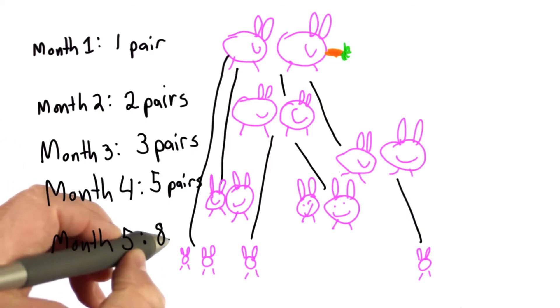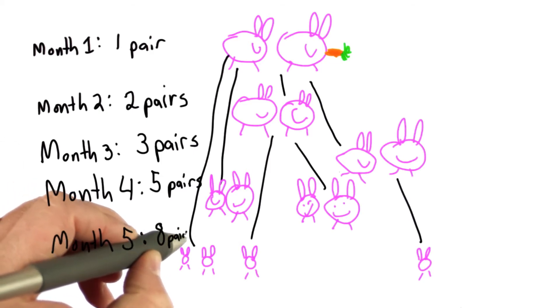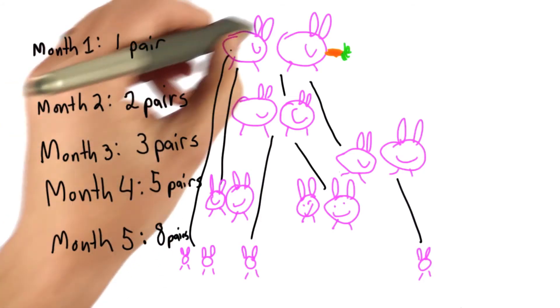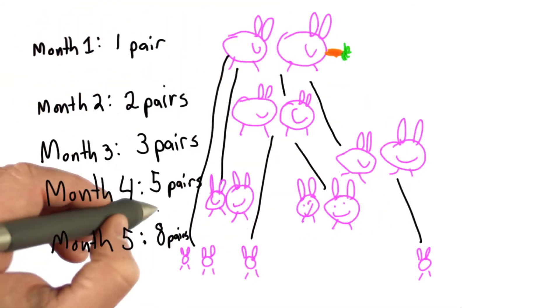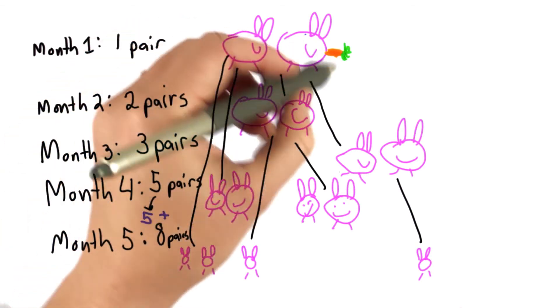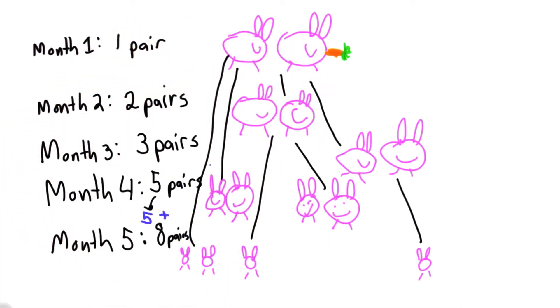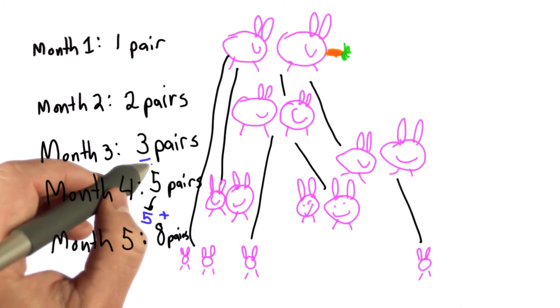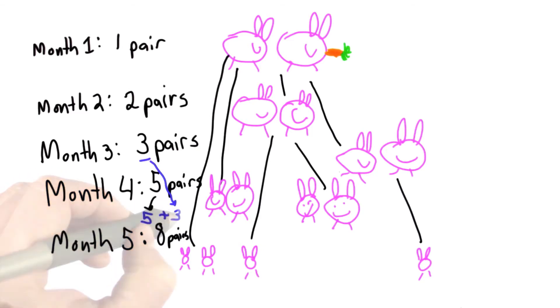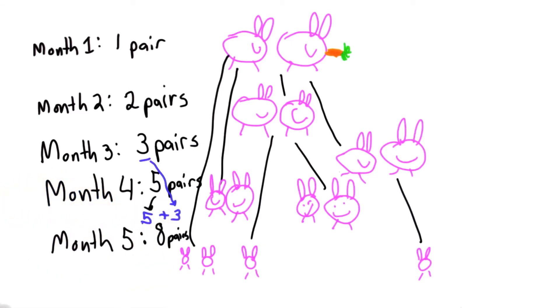The number of rabbits is the number of rabbits we had in the previous month, since those rabbits don't die. So in month five, we had the five pairs that we had in the previous month, plus all of the rabbits that were mature, meaning all the rabbits that we had two months ago, which was three. Those will reproduce. So we have three new pairs of rabbits, plus the five that we had in the previous month.